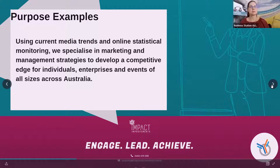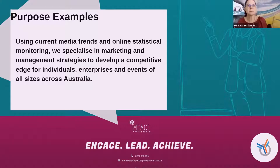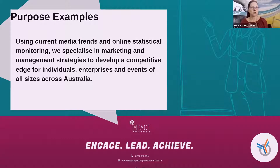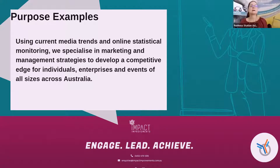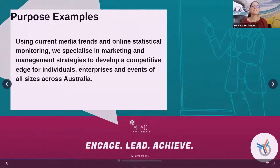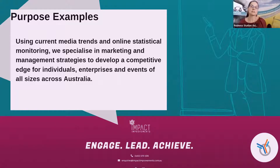Here's one example: 'The purpose of this business was to use current media trends and online statistical monitoring. We specialise in marketing and management strategies to develop a competitive edge for individuals, enterprises and events of all sizes across Australia.' You can see they're stating what the business does, who it services, and the service area. There's also a little bit of why people buy from them, because they specialise in marketing and management strategies.